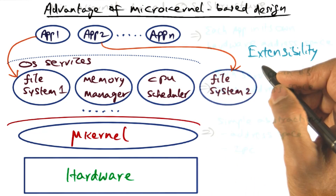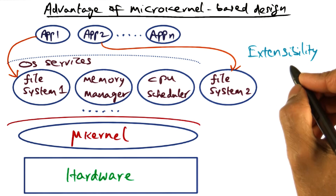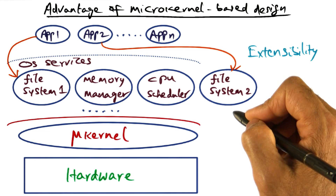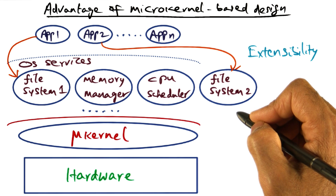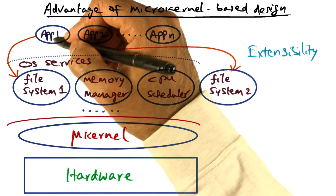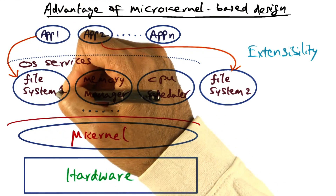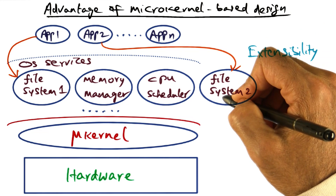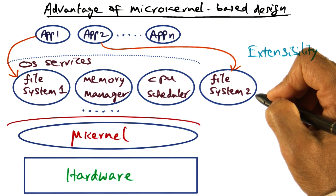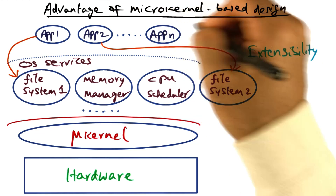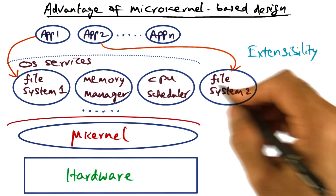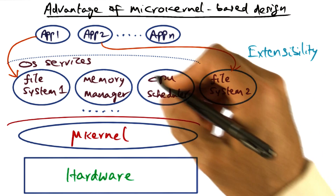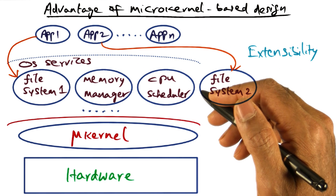So what have we gained by this structure? What we have gained is extensibility. Because these OS services are implemented as server processes, we can have replicated server processes with different characteristics. For instance, one application may choose to use a particular file system, while another may choose a different file system. No longer do we have the one-size-fits-all characterization of the monolithic kernel. This is the biggest draw for microkernel-based design — it is easy to extend and customize the services depending on the needs of the application. This all sounds good, but is there a catch?